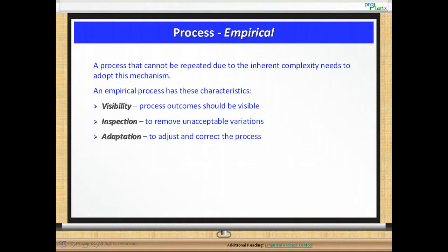Visibility means that the process outcomes should be visible. Inspection is required to remove unacceptable variations. Adaptation helps adjust and correct the process.